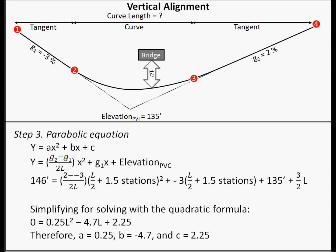Now we'll substitute information from the previous two steps into the parabolic equation, which describes the vertical curve. After carefully simplifying this equation, we can arrive at the information we need to utilize the quadratic formula. Our final relationship is 0 equals 0.25 times L squared minus 4.7 times L plus 2.25.